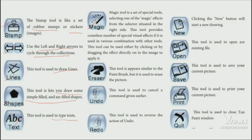The erase tool works like a paintbrush to erase parts of the picture. The undo tool is used to cancel the command given earlier — if you click on a command, you can undo it. This tool can be used to go back step by step.